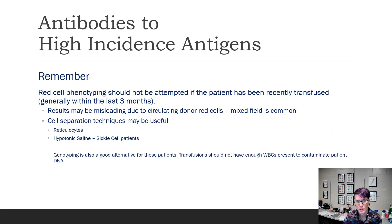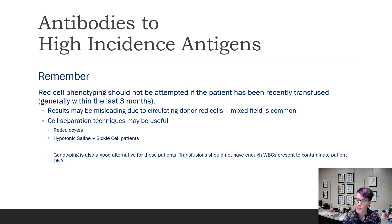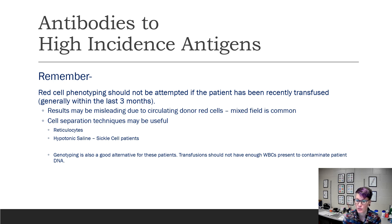An important thing to remember is red cell phenotyping cannot be performed if the patient has been transfused in the last three months, because there may still be some donor cells circulating and you don't want mixed field reactions — you don't know which is the donor reacting and which is the patient reacting. When this happens, there are some cell separation techniques that can be used. You can do a reticulocyte separation, or if the patient is a sickle cell patient, you can do a hypotonic saline wash. That will burst all the donor cells and leave only the sickle cells so that you can phenotype those.